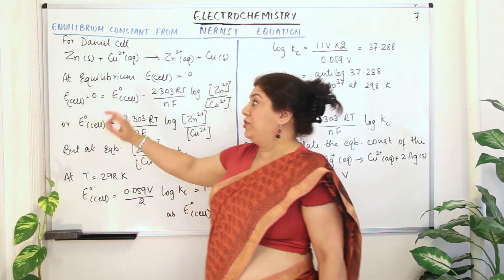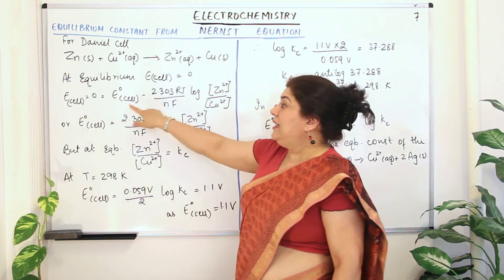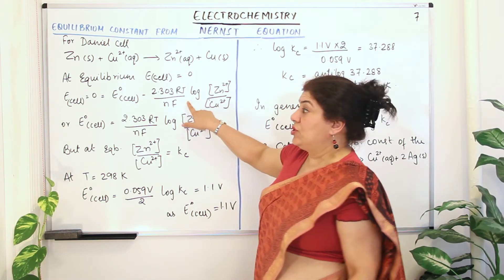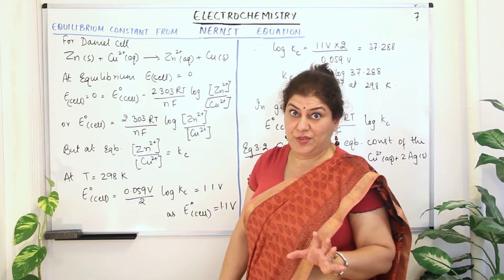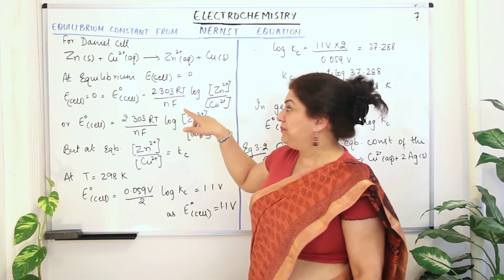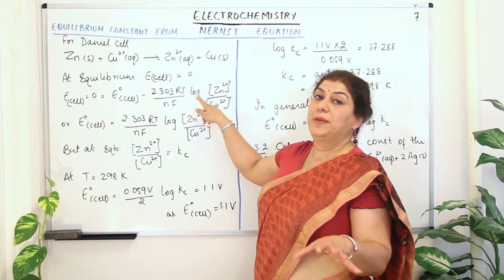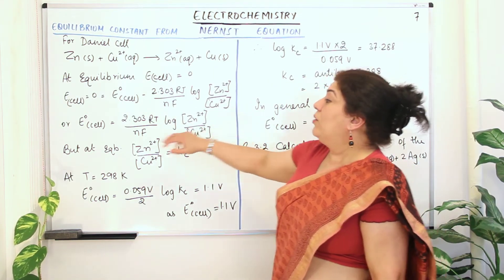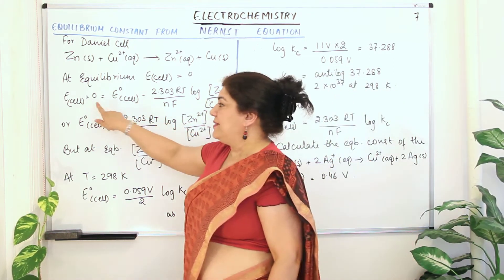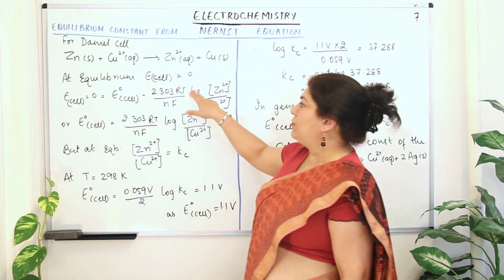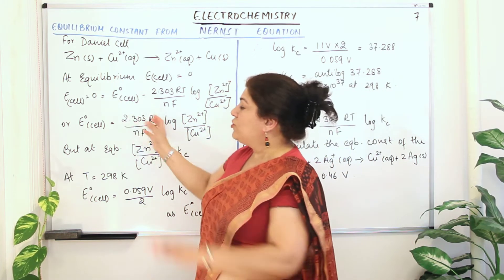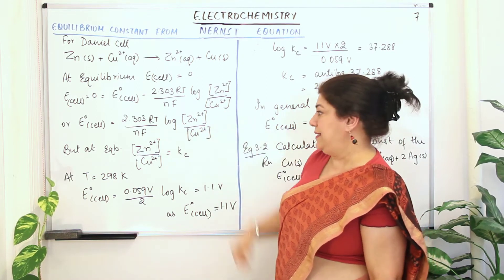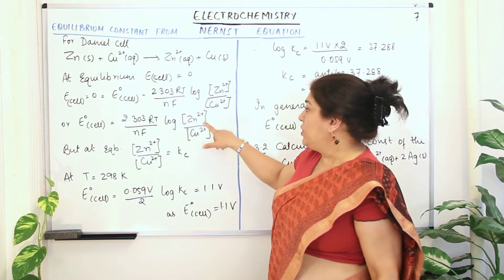If E_cell equals zero, then according to the Nernst equation: 0 = E°_cell − (2.303RT / nF) × log Kc. At equilibrium, concentrations are equilibrium concentrations, so Q becomes Kc. We use 2.303 to convert ln to log base 10. Rearranging, E°_cell = (2.303RT / nF) × log Kc.